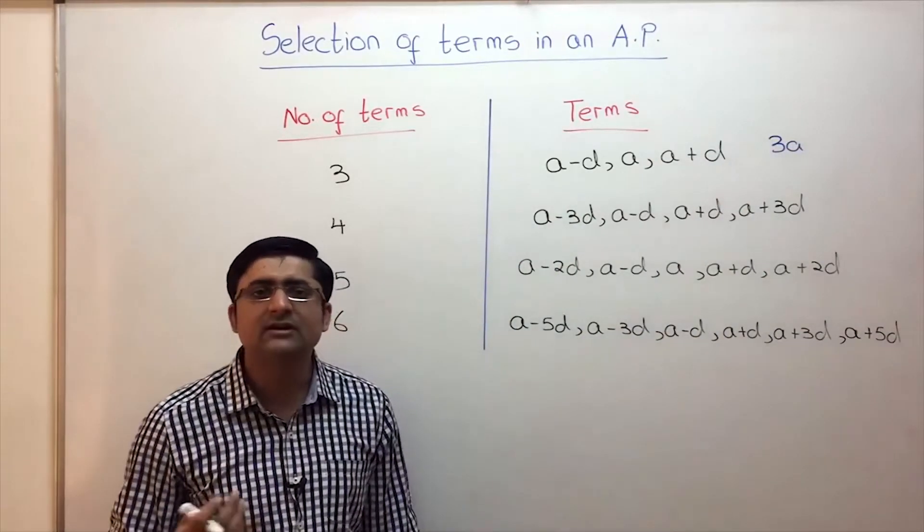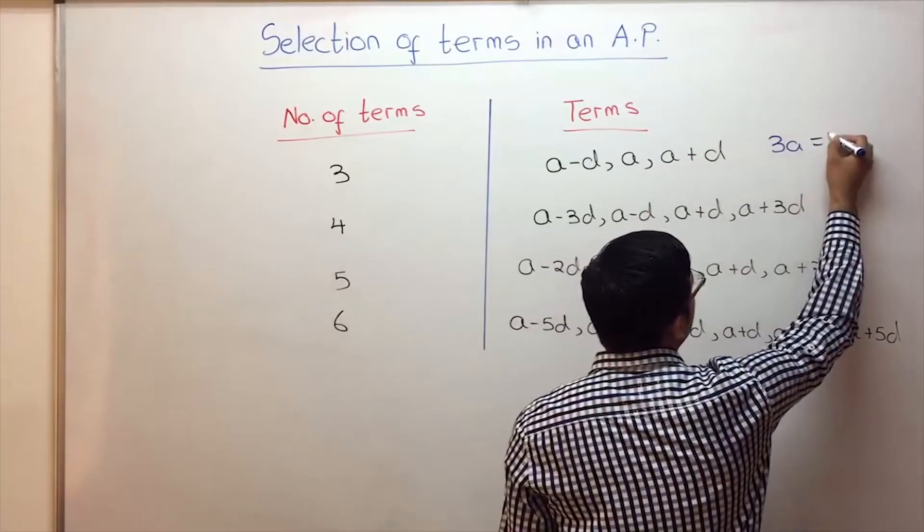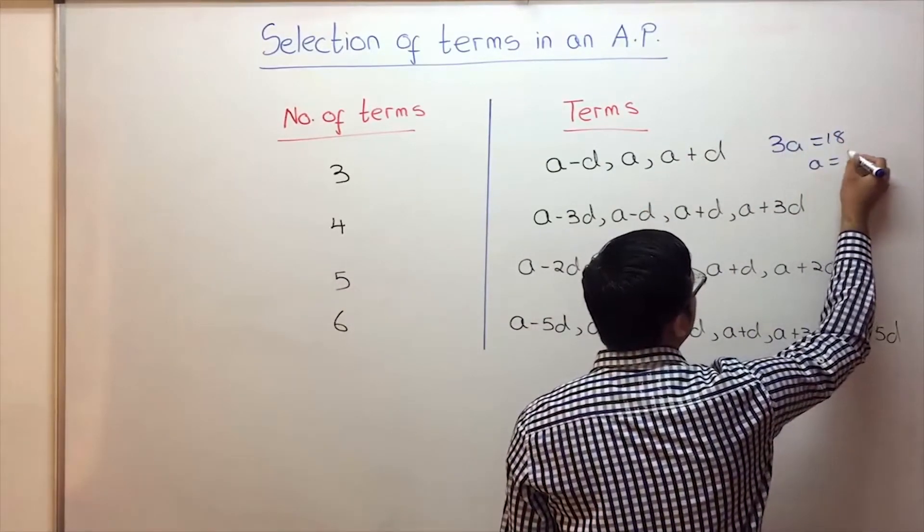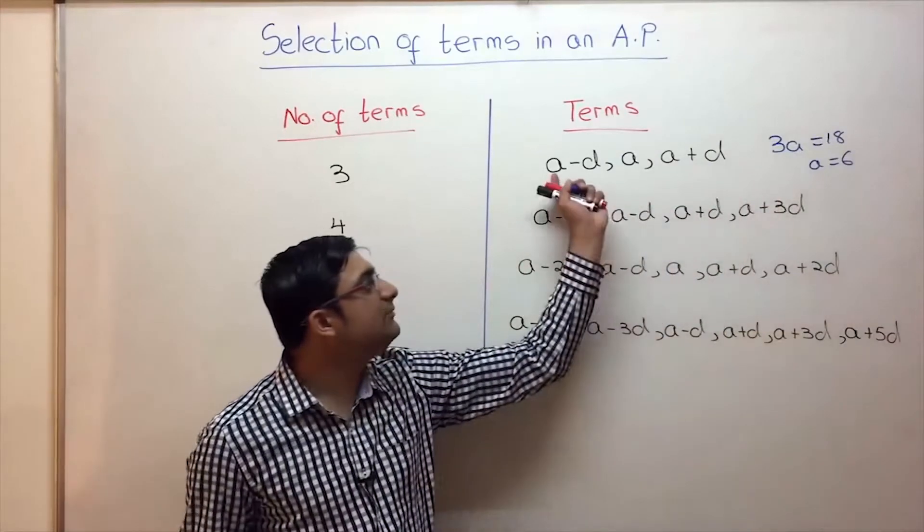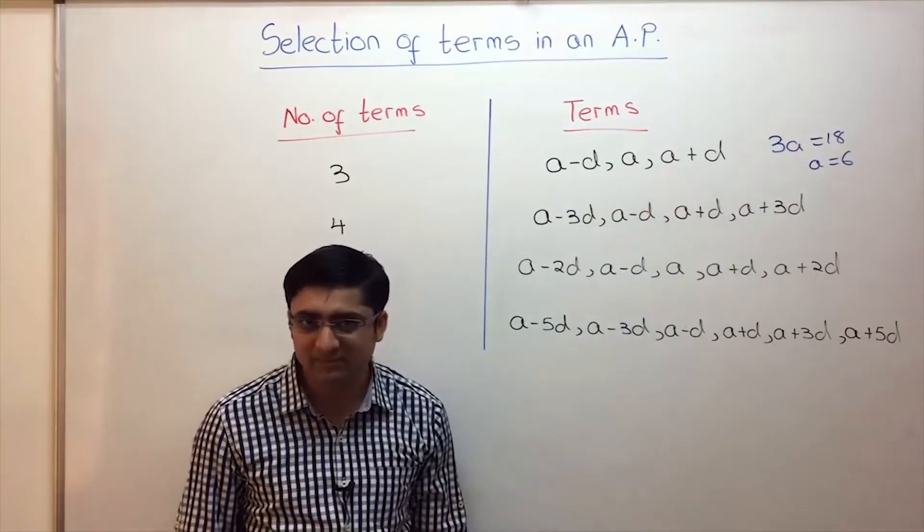So let's say in the problem you are given the sum of three terms in an AP is 18. So immediately 3A is equal to 18, so I will get A is equal to 6. The moment we get one variable, 6 minus D, 6, 6 plus D, then there is only one variable left.